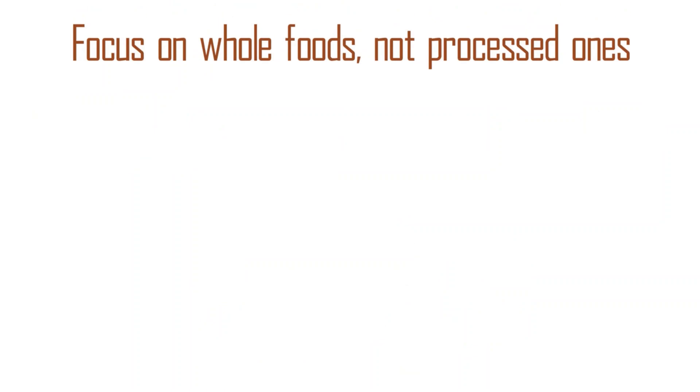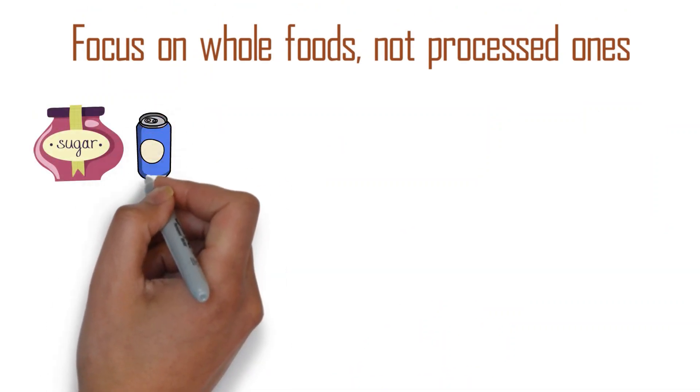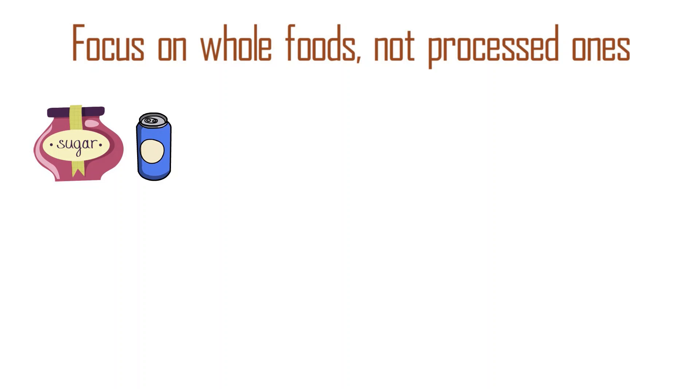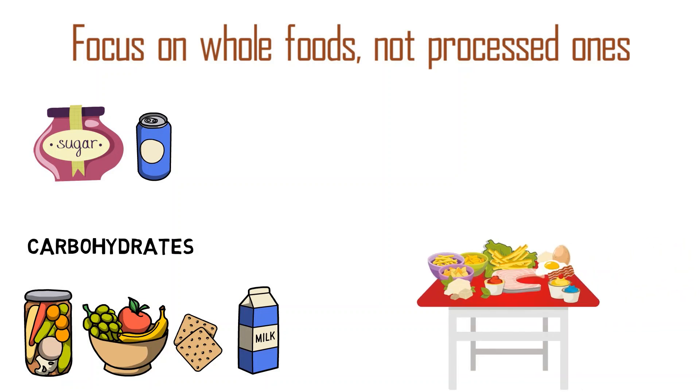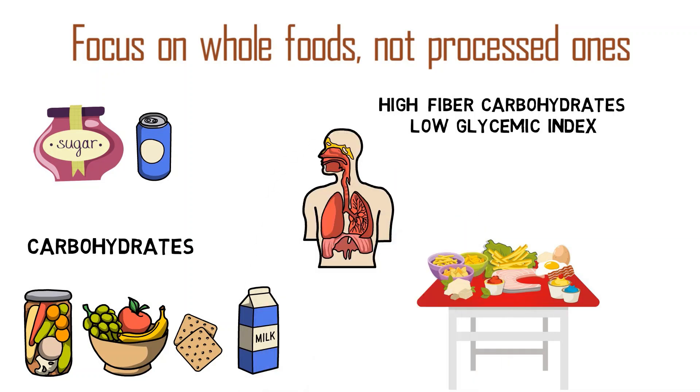Focus on whole foods, not processed ones. Added sugars only dominate the packaged and processed foods, the same products that offer less nutrition overall than whole foods. You also get sugar naturally from carbohydrates, vegetables, fruits, whole grains, and low-fat dairy sources. A healthy diet focuses on these whole foods. They provide high-fiber carbohydrates that have a low glycemic index. This way, your body gets a slow and steady rise in blood sugar instead of a sudden sugar rush and subsequent crash.